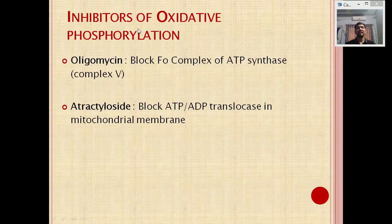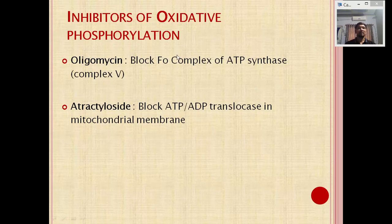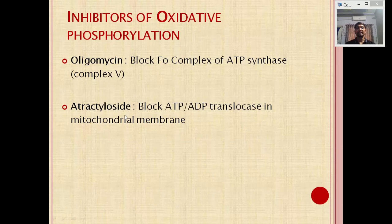Inhibitors of oxidative phosphorylation or Complex 5: oligomycin blocks the F0 complex of the ATP synthase. A second compound, atractyloside, blocks the ATP-ADP translocase present in the inner mitochondrial membrane — this translocase is responsible for transferring ATP synthesized in the matrix to outside the mitochondria.